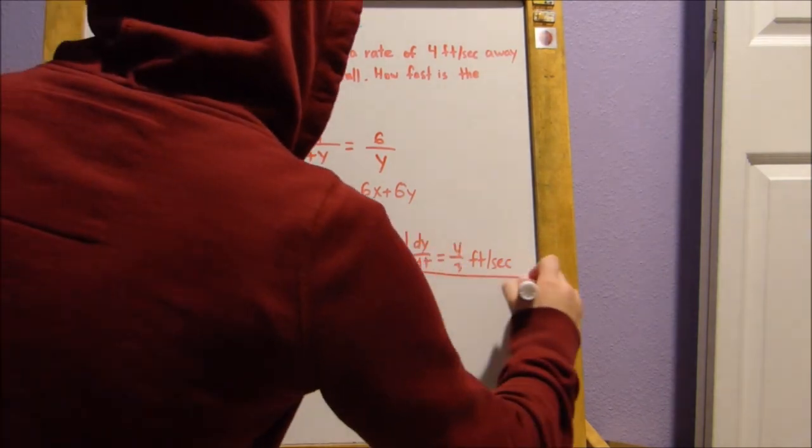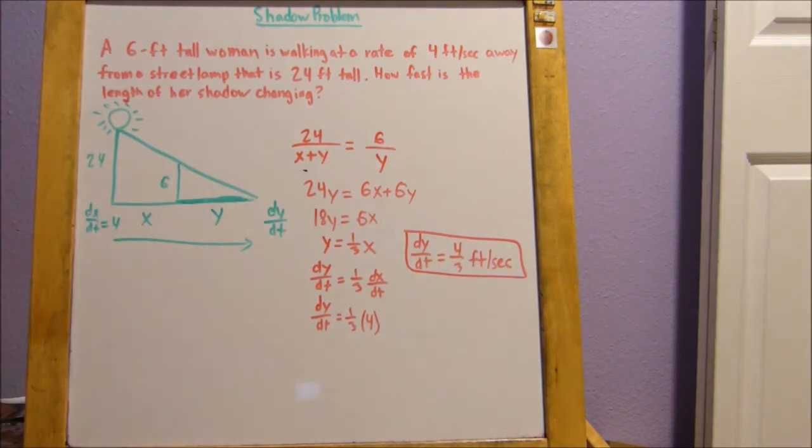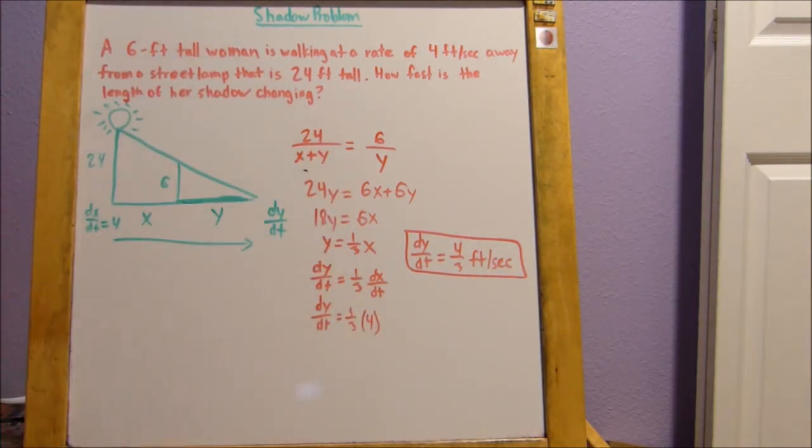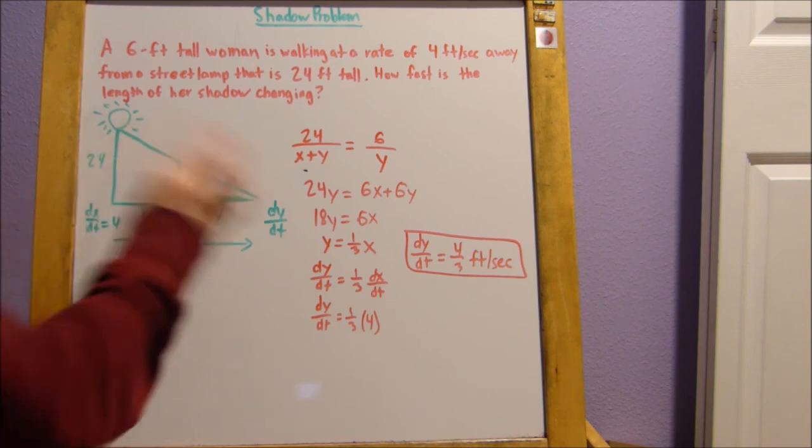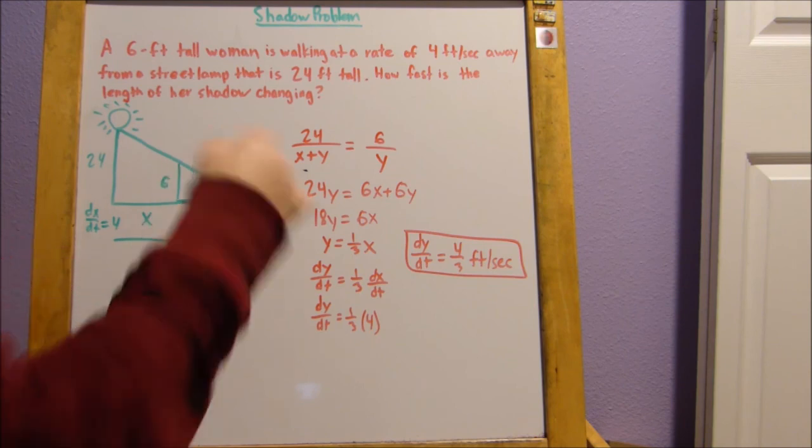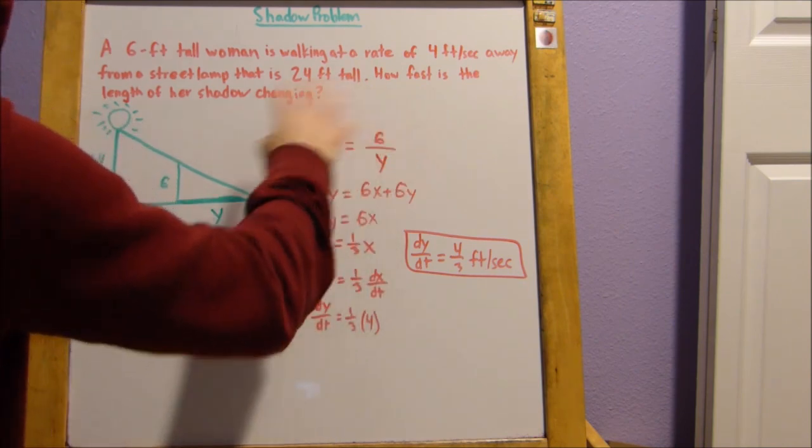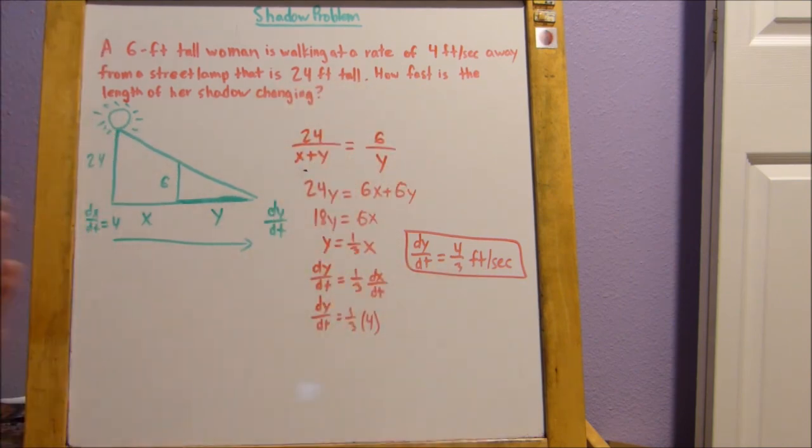And you see, that's how easy it is to solve for rates in shadow problems. And, but there's another type of shadow problem that talks about the tip of your shadow, so just this point here. That will be in another video, but it's pretty similar other than it uses subtraction in this part here, but it's pretty similar.